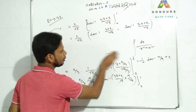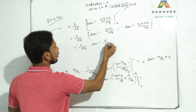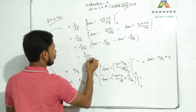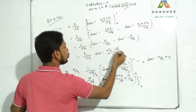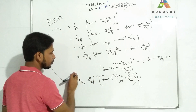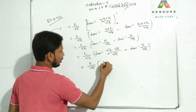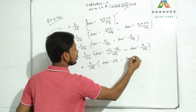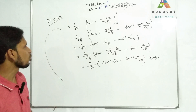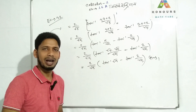So the final answer is 2 by root 5 times tan inverse of root 5, minus tan inverse of 2 by root 5. If you liked this video, please like, comment, and share. Thank you for watching. Assalamu Alaikum.